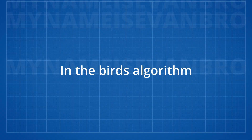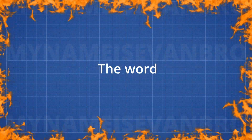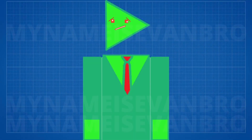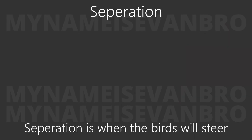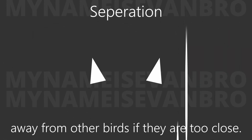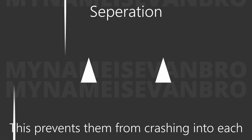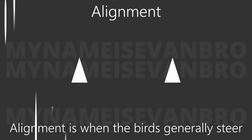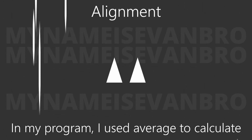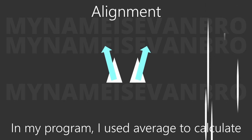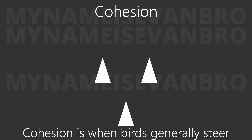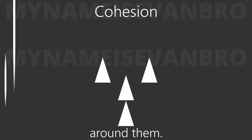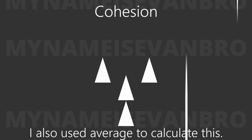In the boid's algorithm, separation is when the birds will steer away from other birds if they are too close. This prevents them from crashing into each other. Alignment is when the birds generally steer closer to each other. In my program, I used averages to calculate alignment. Cohesion is when birds generally steer towards the average position of the birds around them. I also used averages to calculate this.